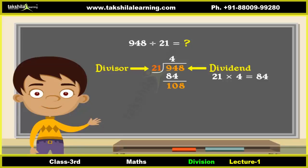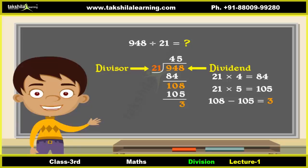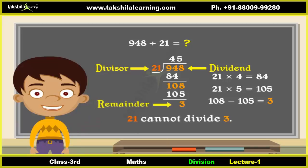Now divide the new number, one hundred eight, by twenty-one. Twenty-one fives equals one hundred five. Place five above and the answer under one hundred eight. Subtract one hundred five from one hundred eight — the answer is three. Twenty-one cannot divide three, so three is the remainder and forty-five is the quotient.